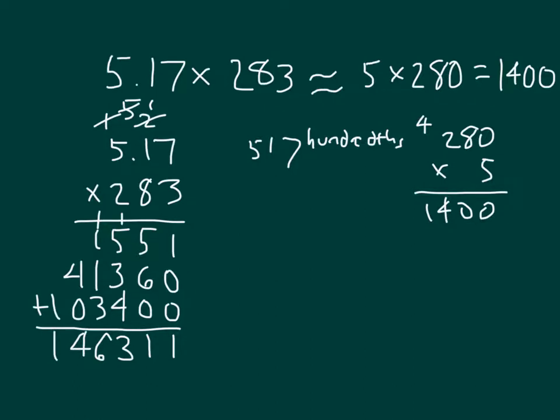That's 146,311. But remember, that was hundredths. So my actual answer should be 1,463.11. That's 1,463 and eleven hundredths. Which is reasonable with my 1,400 as my estimate. And in this case here, you'll notice that both of the factors actually got rounded down. That's why my estimate is lower than my actual answer.